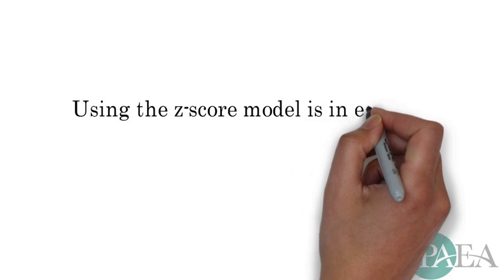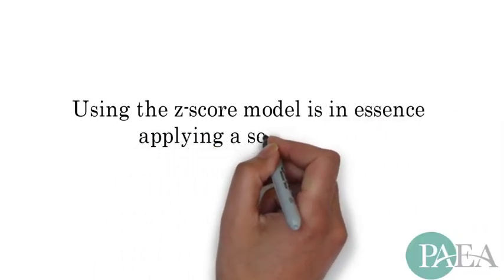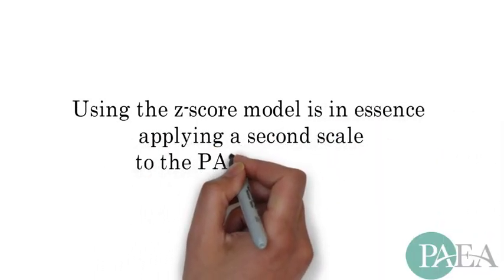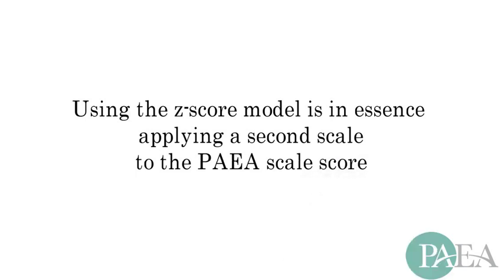Using the Z-score model is in essence applying a second scale to the PAEA scale score. This may be a reasonable option for programs, especially those programs already using the Z-score model.